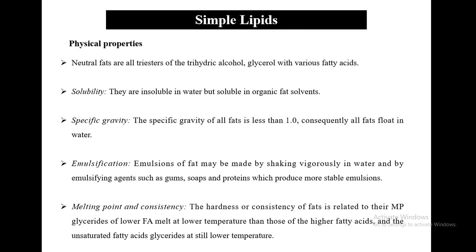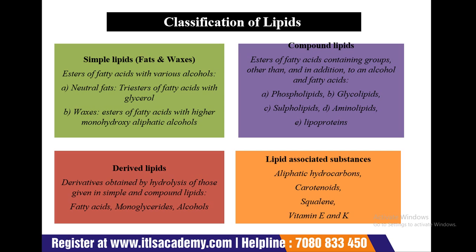Lipids include fats, oils, waxes, and related compounds. Classification includes simple lipids, compound lipids, derived lipids, and lipid-associated substances. Simple lipids are esters of fatty acids with various alcohols, such as neutral fats and waxes. Compound lipids also contain groups in addition to alcohol and fatty acids, for example phospholipids, glycolipids, sulfolipids, amino lipids, and lipoproteins. Derived lipids are obtained by hydrolysis of simple and compound lipids. Lipid-associated substances include aliphatic hydrocarbons, carotenoids, squalene, and vitamins K and E.